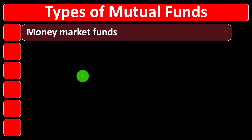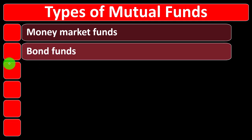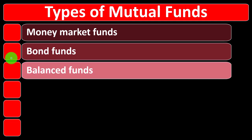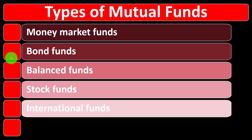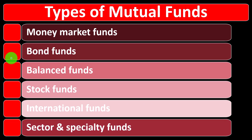We've been diving into mutual funds in a bit more detail in prior presentations. Let's give a quick recap of different types of mutual funds we've been discussing: money market funds, bond funds — that's what we'll dive into in more depth here — balanced funds, stock funds, international funds, and sector and specialty funds.